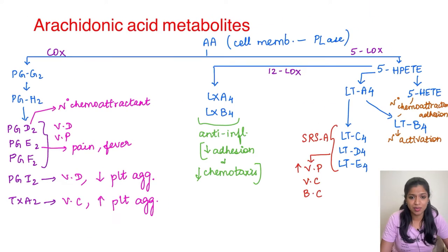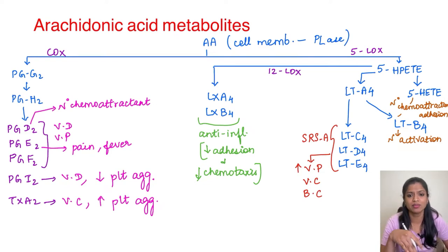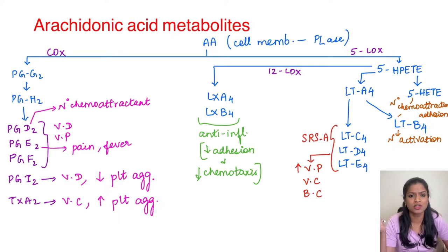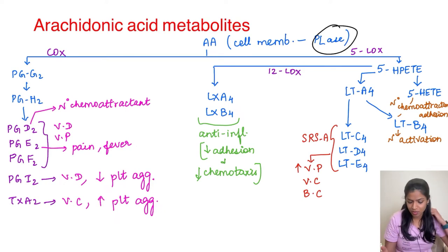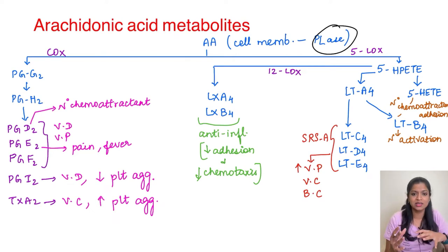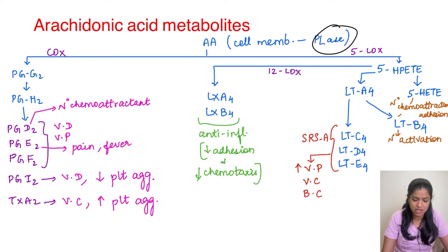Moving on to the next mediator which is arachidonic acid metabolites. Arachidonic acid is a substance which is going to be derived from the cell membrane. The cell membrane contains phospholipids like linoleic acid. With the action of phospholipase A2, this arachidonic acid is going to be derived from the cell membrane.